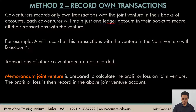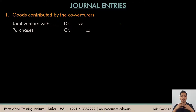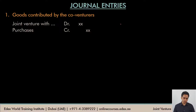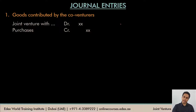The first journal entry is where co-venturers contribute assets, money, resources, or goods to the joint venture business. If goods have been contributed by the co-venturer from his own stock, he should be compensated, so the joint venture account is debited to show the amount is receivable, and purchases is credited. If money is contributed, cash or bank would be credited. If any other asset is contributed, that asset would be credited.